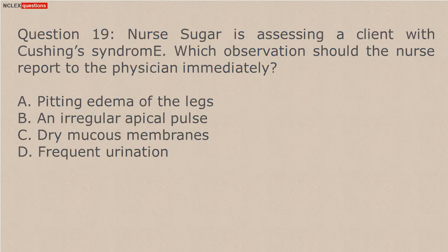Question 19. Nurse is assessing a client with Cushing's syndrome. Which observation should the nurse report to the physician immediately? A. Pitting edema of the legs. B. An irregular apical pulse. C. Dry mucous membranes. D. Frequent urination.